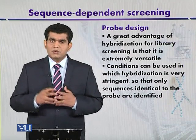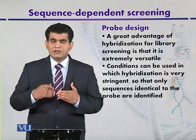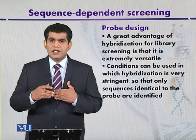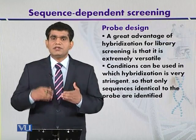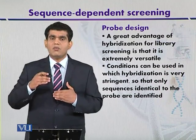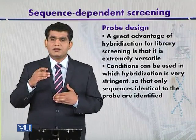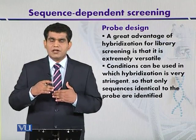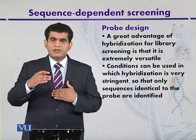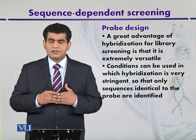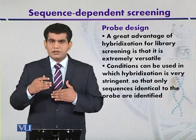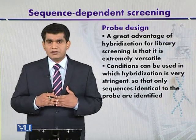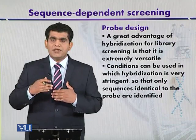To detect complementary sequences in the target gene, hybridization using the probe can be performed at high stringency. High stringency conditions ensure that only highly complementary sequences in the probe and the target gene hybridize with each other. High stringency means increasing the annealing or melting temperature and lowering the ionic strength of the salt.